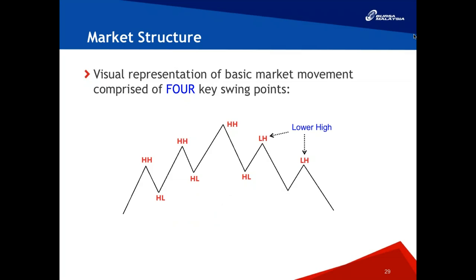The third swing point is the lower high: when each peak is lower compared to the previous peaks. From the drawings you can see two lower highs. The fourth is the lower low: when the low is lower than the previous low. A sequence of lower highs and lower lows will also form a trend — in the opposite direction.